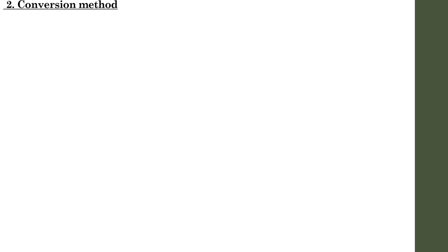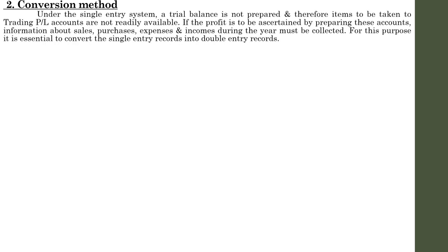The second method is the conversion method. Under the single entry system, a trial balance is not prepared, and therefore items to be taken to the trading profit and loss account are not easily available, because we are not recording all aspects of a transaction. If profit is to be ascertained by preparing these accounts, information about sales, purchases, expenses, and incomes during the year must be collected.